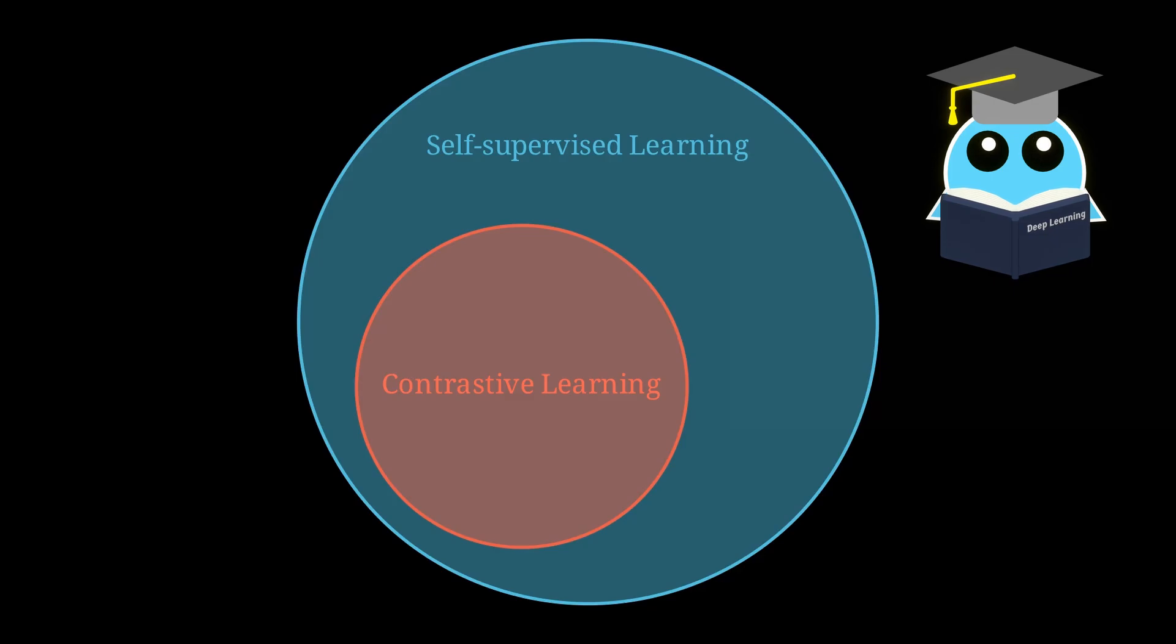The key idea is pretty intuitive. Images that show similar objects should have similar representations in the model's representation space, while images that are different should be represented in a way that makes them far apart. Think of it this way.